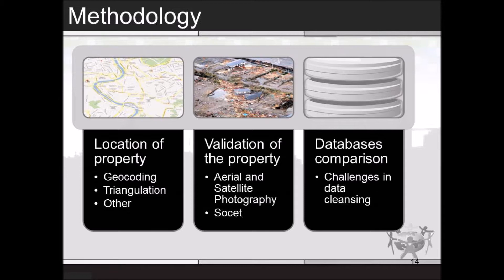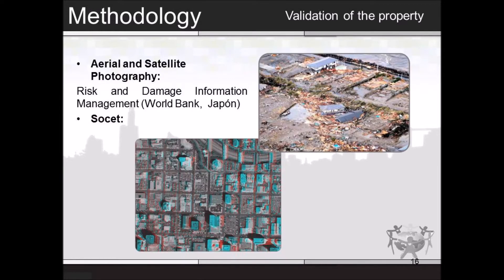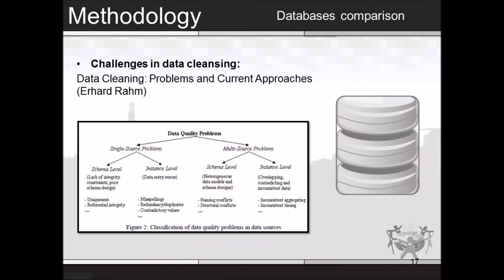The methodology follows three steps to meet the general objective, based on case studies and academic papers. The first step is to properly identify the properties affected by the disaster, using addresses of affected records to locate the property by geocoding or topographic concepts such as triangulation. The second step is validation of property, involving satellite and aerial photographs to verify the site was affected, using a case study of the Japanese World Bank risk and damage information management and a software called Socket to identify differences in images corresponding to damages. The final step is comparison of databases, referring to proper management of data exchanged between different databases to corroborate information from victim records and create new databases for future use.